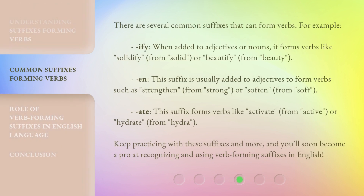There are several common suffixes that can form verbs. For example, "-ify": when added to adjectives or nouns, it forms verbs like "solidify" from "solid", or "beautify" from "beauty". Another suffix is "-en", which forms verbs such as "strengthen" from "strong", or "soften" from "soft". There is also "-ate", which forms verbs like "activate" from "active", or "hydrate" from "hydra". Keep practicing with these suffixes and more, and you'll soon become a pro at recognizing and using verb-forming suffixes in English.